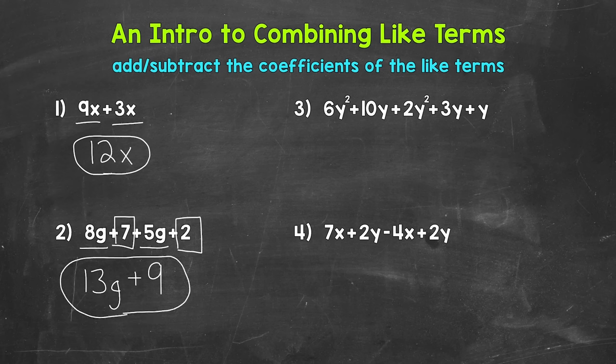That expression of 13g plus 9 is equivalent to the original expression. We were just able to simplify the original expression by combining like terms. We started with four total terms, but we were able to combine like terms and now we only have two total terms.